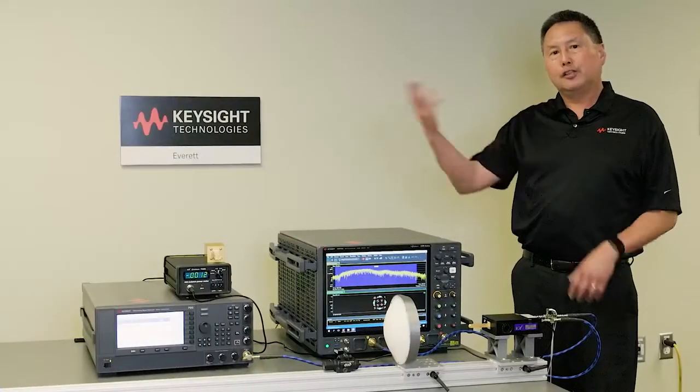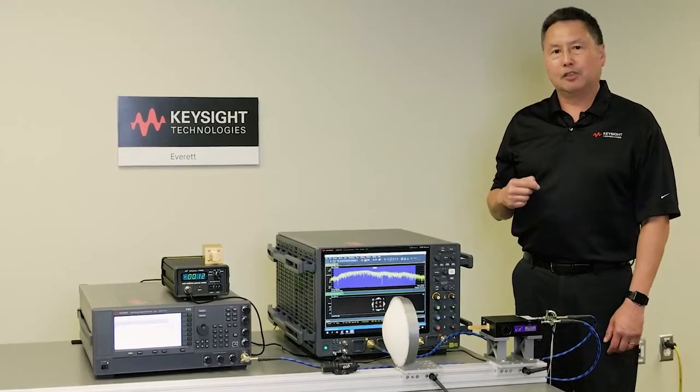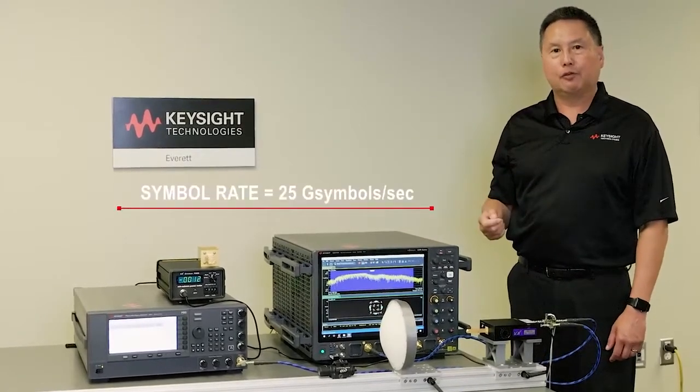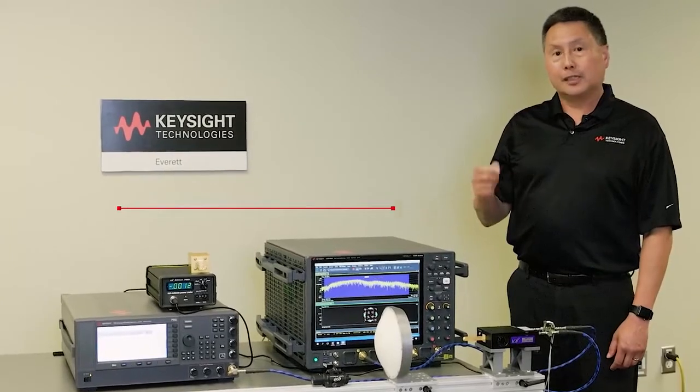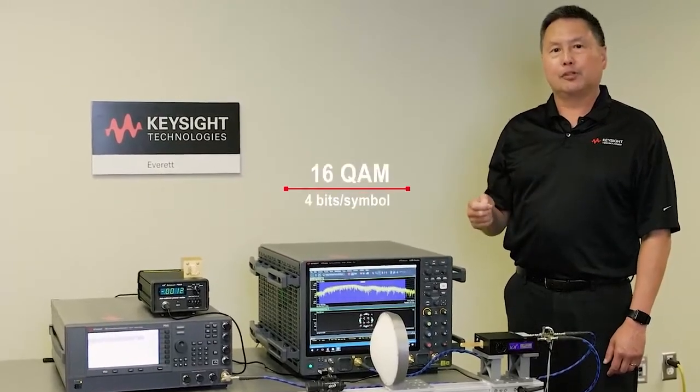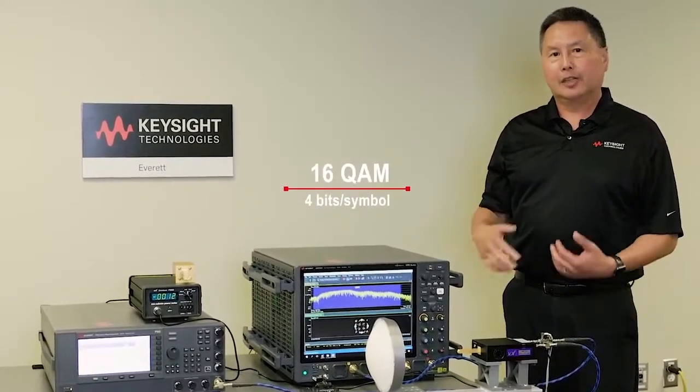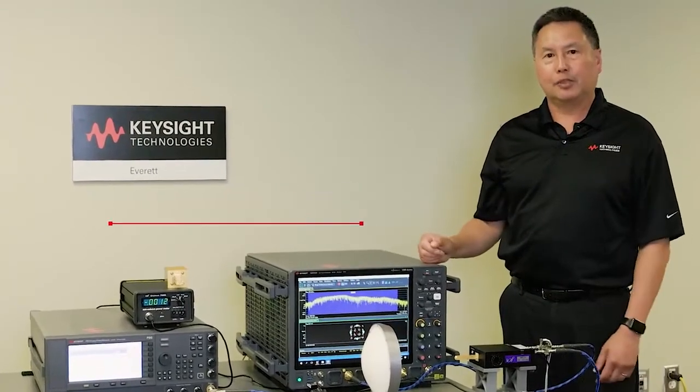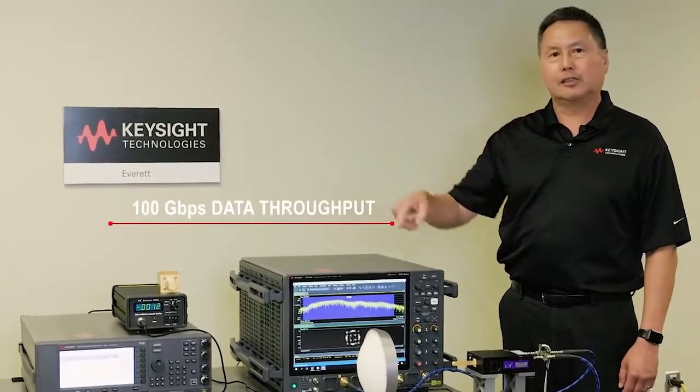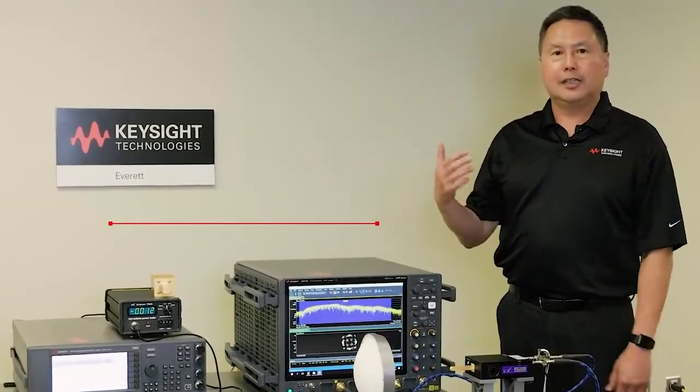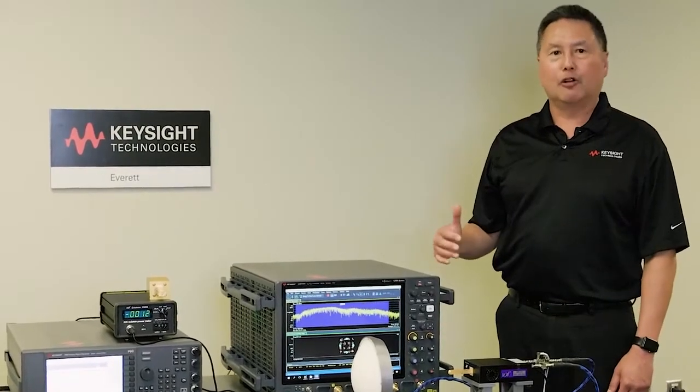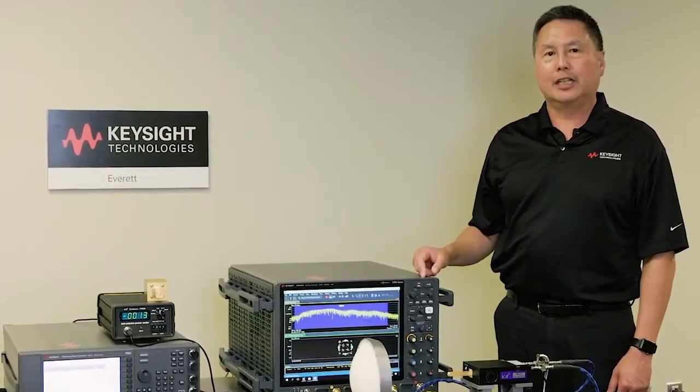Now if you recall on the transmit side, we talked about the signal that was being created. It had a symbol rate of 25 gigasample per second. And so for a 16-QAM signal, that's four bits per symbol that are being transmitted. So that equates to 100 gigabit per second data throughput across this link. Realistically, the actual data throughput is a little bit lower if we just count the data bits in the data payload.